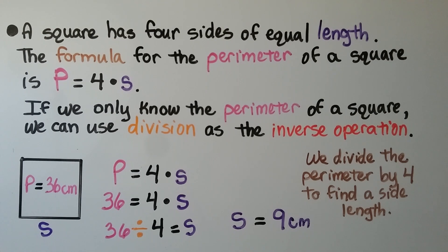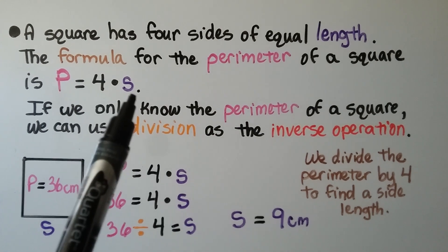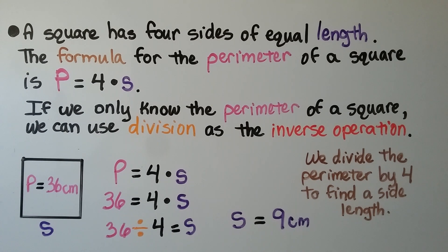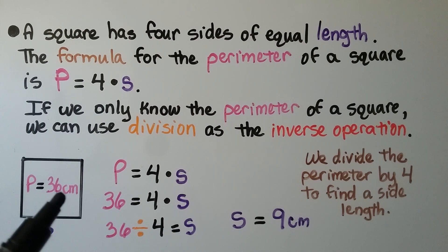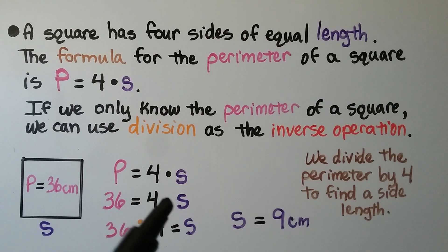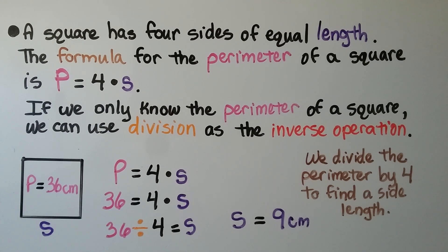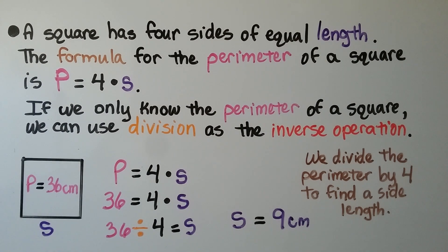A square has 4 sides of equal length, and the formula for the perimeter of a square is P equals 4 times s for side. If we only know the perimeter of a square, we can use division as the inverse operation. If the perimeter is 36, we have 36 equals 4 times the side length. Using division: 36 divided by 4 equals 9. It's in centimeters, so each side length is 9 centimeters.